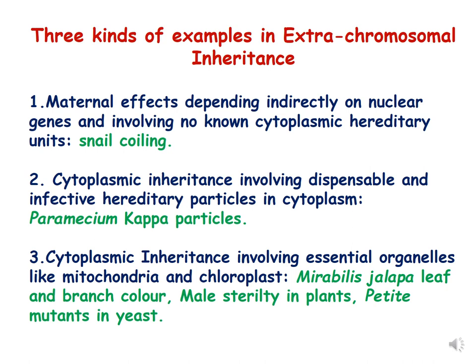The second is cytoplasmic inheritance, which involves dispensable and infective hereditary particles — the example being Paramecium, which includes kappa particles. The third type is controlled by organellar genes, involving essential organellar genes like mitochondria and chloroplast. The example of Mirabilis jalapa leaf and branch color was discussed in the first lecture, and this also includes male sterility in plants controlled by mitochondrial genes. In today's lecture we will discuss petite mutants in yeast.